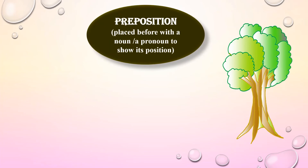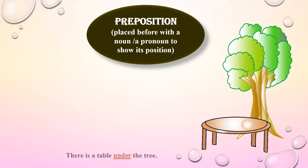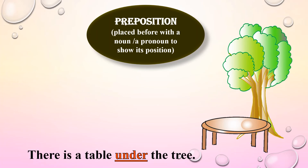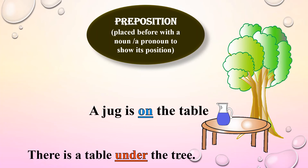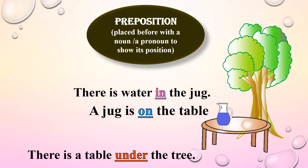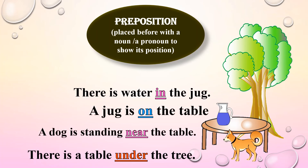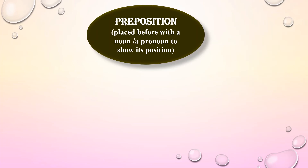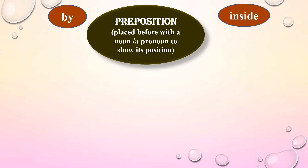Now let us have a look at preposition. A preposition is a word placed before a noun or pronoun to show the relation of the noun or pronoun to something else — that is, to show its position. There is a table under the tree — here under is the preposition, showing the position of the noun table. A jug is on the table — here on is the preposition. There is water in the jug — here in is the preposition. A dog is standing near the table — near is the preposition. Some other prepositions are: by, inside, over, down, below, in front, beside, beneath, into, out of, at.